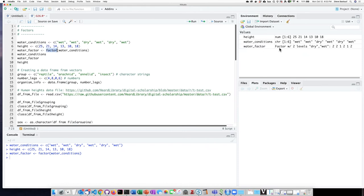And when we look at this, we can see that it's identified in a different way from the character vector. It's identified as a factor with two levels, wet and dry. We can see this if we display the character vector.